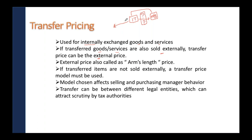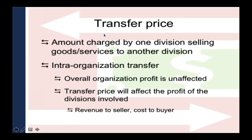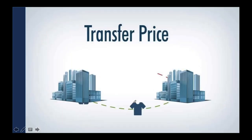The external market price at which goods are sold to outside companies is called the market price, also known as the arms length price. This IT department provides services to external customers at market price. In a previous example, the t-shirt is sold to the external customer at $20 — that is the market price.